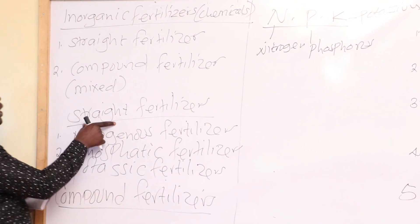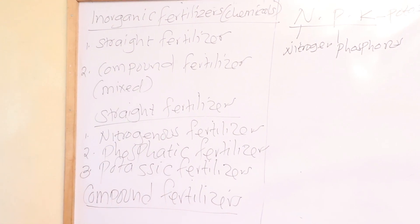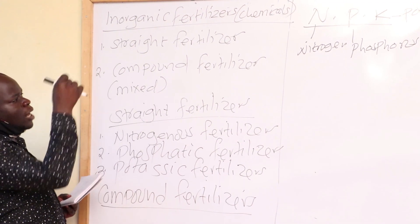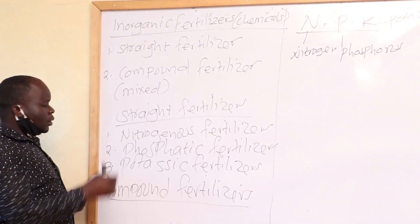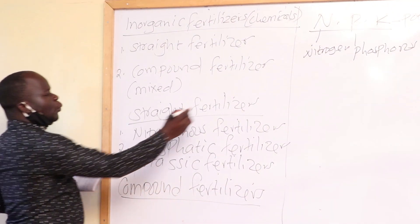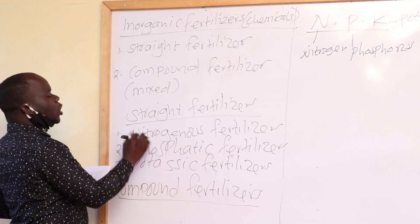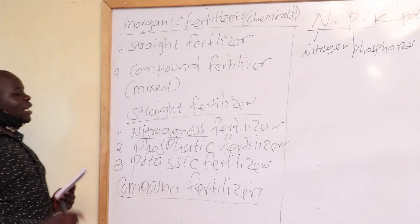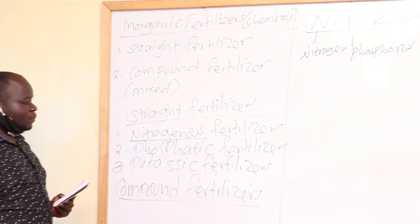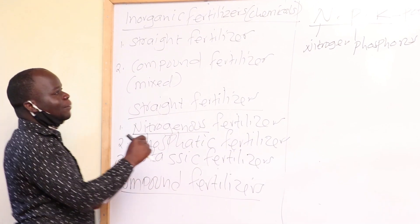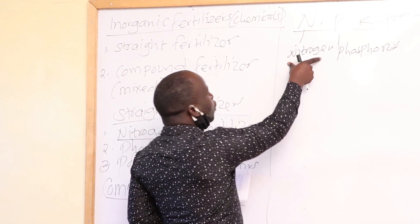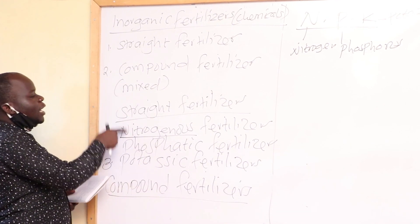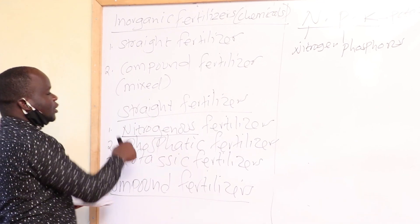Now let's begin by looking at straight fertilizers. As I have just said, straight fertilizers contain only one of the major macronutrients — either nitrogen, phosphorus, or potassium. We also have types of straight fertilizers. Number one: nitrogenous fertilizers. From the word nitrogenous, these are fertilizers that contain nitrogen only.